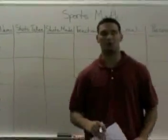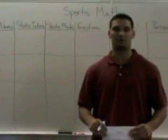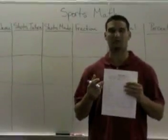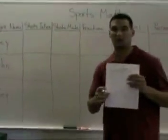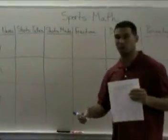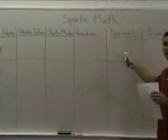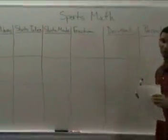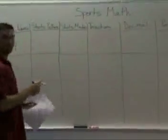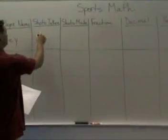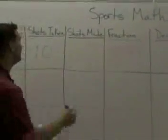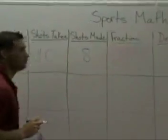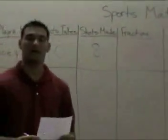All right boys and girls, so here we are in the classroom. We finished shooting our free throws and we remembered to record after each round the shots we've taken and the shots we've made. We're going to be using three examples from our data sheet and learning how to take our information collected after shooting and create fractions, create decimals, and finally create percentages. After round one, we recorded that Joey has taken ten shots, and out of a total of ten shots, Joey made eight free throws.